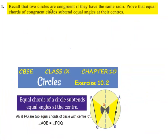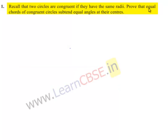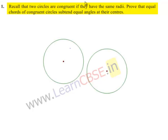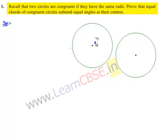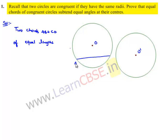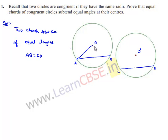Moving on to question number one: recall that two circles are congruent if they have the same radii. Prove that equal chords of congruent circles subtend equal angles at their centers. Let us consider two congruent circles with centers O and O'. Their radii are equal. Let us consider two chords AB and CD of equal lengths in the two circles. We need to prove that angle AOB is equal to angle CO'D.